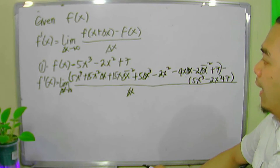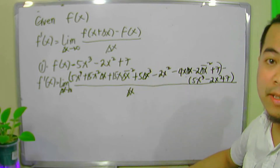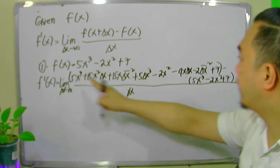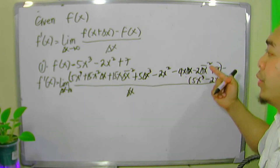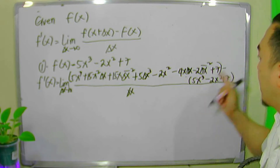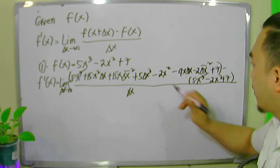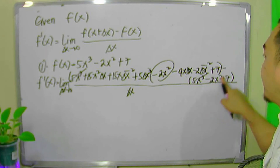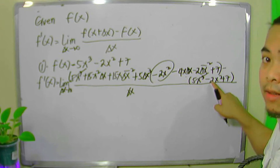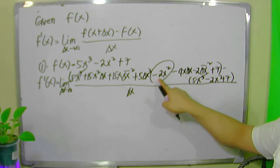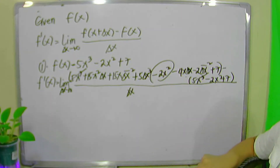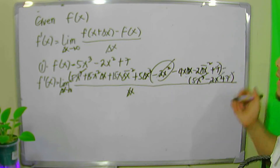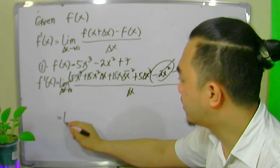We simplify the numerator. We notice that positive 5x cubed minus 5x cubed gives us zero. Also, negative 2x squared minus negative 2x squared — that becomes plus 2x squared — also gives us zero. And positive 7 minus 7 gives us zero as well. So those terms are all canceled.